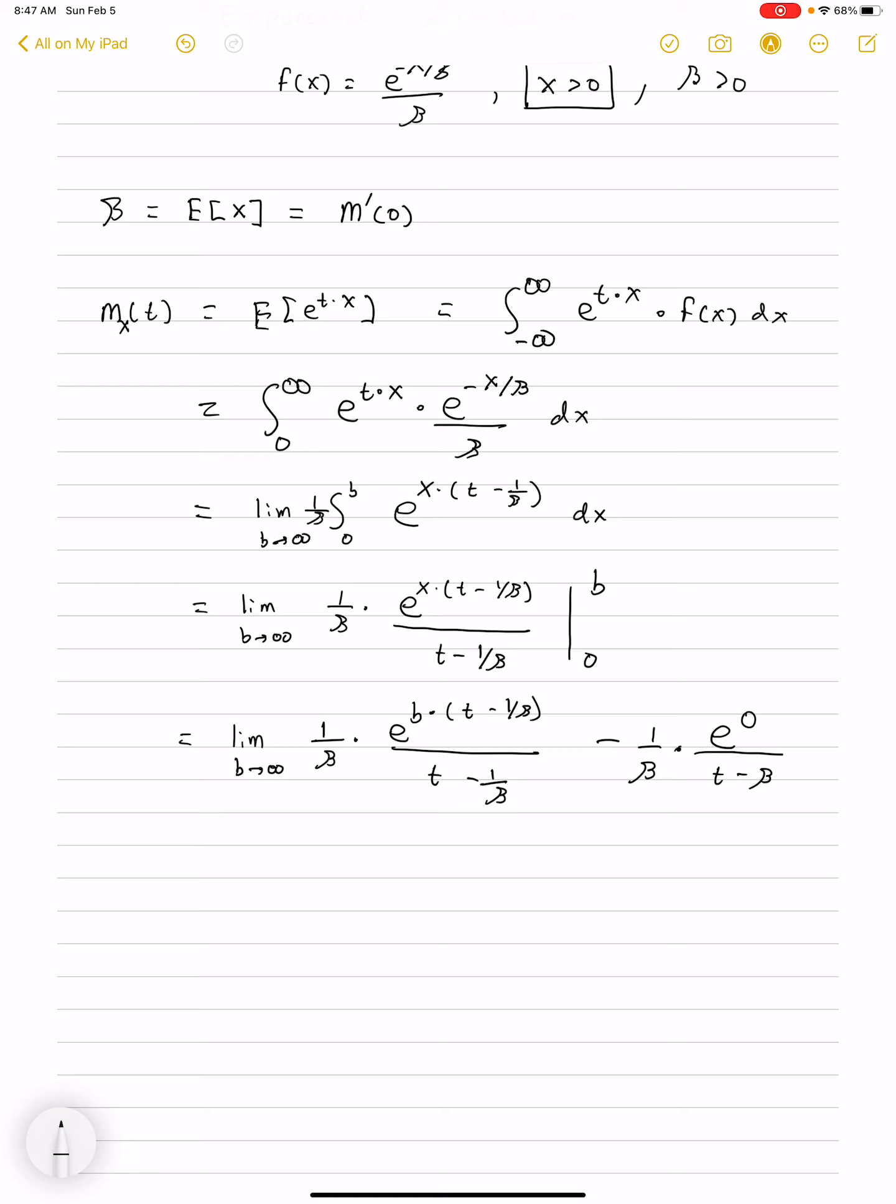Now, for the convergence of this integral, we require that the numerator here, that this be negative. The limit is going to infinity, which means that the only thing that can be negative is this t minus 1 over beta being less than 0. So, an equivalent formulation to this is that t is less than 1 over beta. Beta is a positive number. So, this is the requirement for convergence.